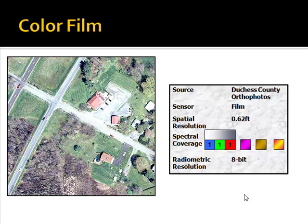Here's an example of color film — again a film-based sensor, this time from Dutchess County with a spatial resolution of 0.62 feet, so very high resolution. The spectral coverage has three bands: blue, green, and red — the primary colors of the electromagnetic spectrum. By assigning those to the red, green, and blue color guns in our computer, we can produce the color image shown here.